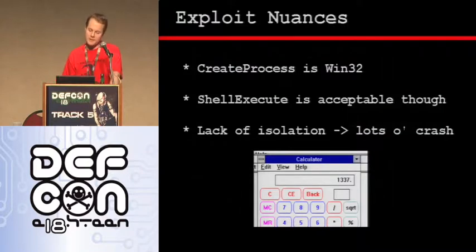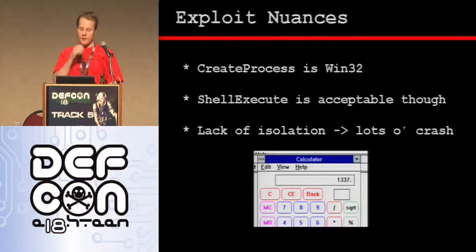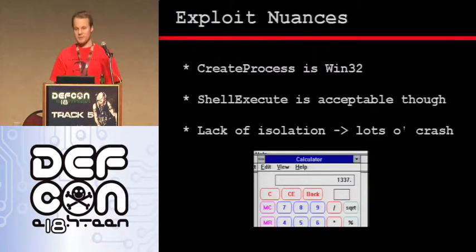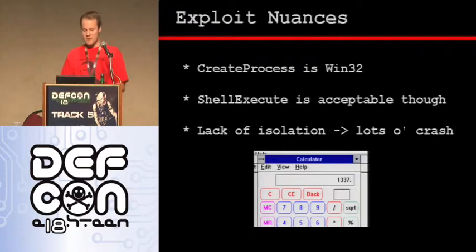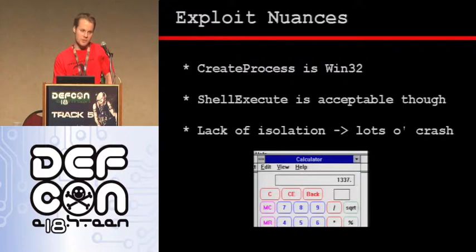Some things to keep in mind when exploiting Windows 16 as opposed to Win32: if you're doing the traditional popping of calc.exe using CreateProcess — CreateProcess doesn't actually exist in Win16, it was introduced in Win32. But we can use ShellExecute to pop the 16-bit calc. Another side effect of the Win16 memory architecture is the lack of isolation between processes, so if you hose one application your entire system goes down. Actually going through these crashes was absolutely, ridiculously painful. We've successfully eliminated the target by exploiting MS Paintbrush — maybe they were designing the movie in Paintbrush, like a flipbook style, kind of like my presentation here.